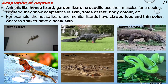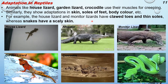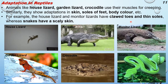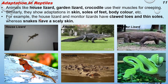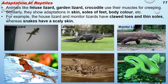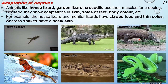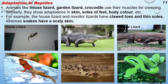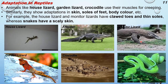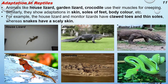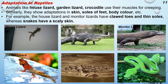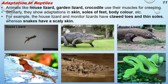House lizards and monitor lizards have clawed toes and thin scales, whereas snakes have scaly skin. The monitor lizard shown is very huge - it is kept as a pet in African countries and is also called the Komodo dragon. You can also see a green viper snake slightly moving its tail. Snakes have scaly skin and can shed or change their skin at times.